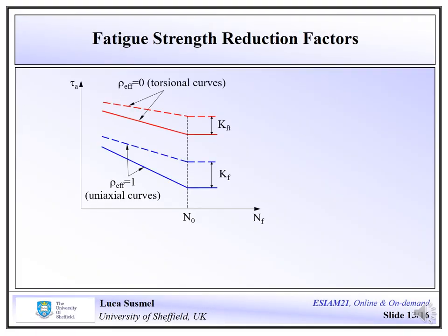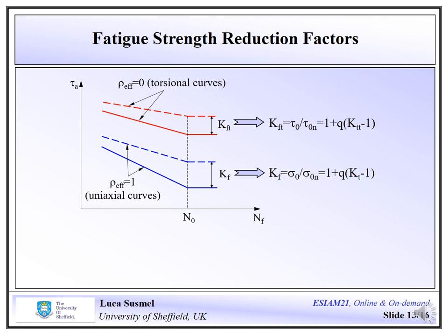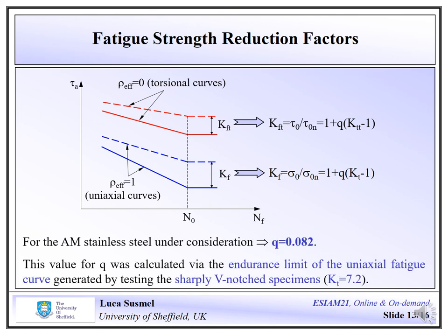The uniaxial and torsional fatigue curves needed to calibrate the modified Wöhler curve method for each notch geometry were determined from the plain fatigue curves by estimating K_F and K_FT. These were calculated using standard formulas where K_T and K_TT are the stress concentration factors and Q is the notch sensitivity factor. For this particular AM steel, Q was found to be equal to 0.082, calculated by considering the endurance limit of the uniaxial fatigue curve generated by testing the sharply notched specimens having a uniaxial K_T value equal to 7.2.